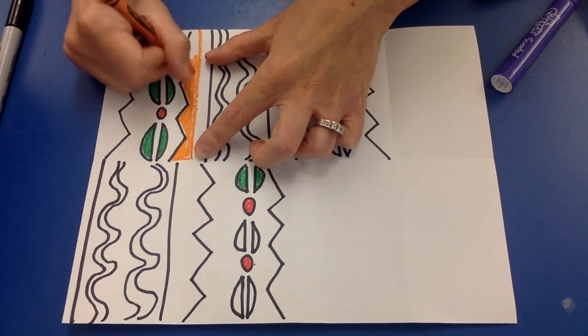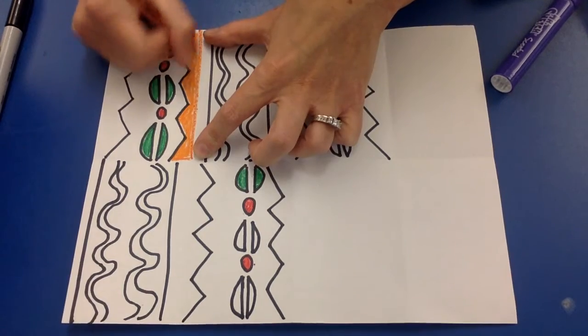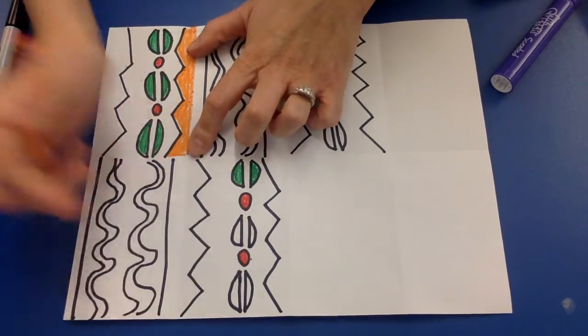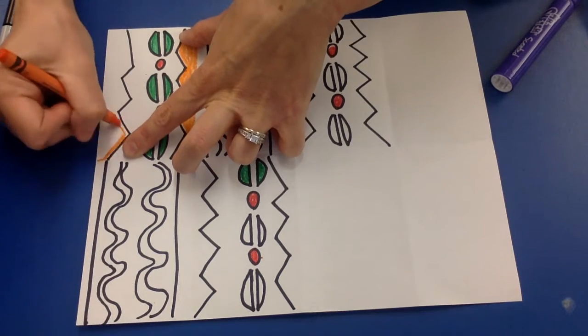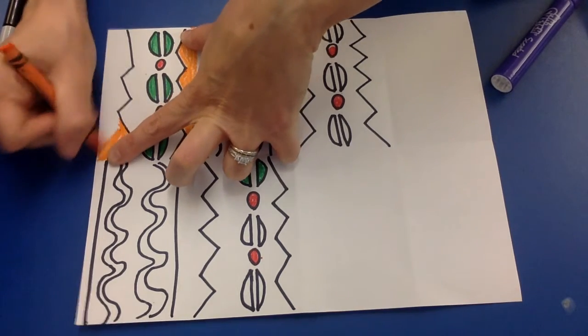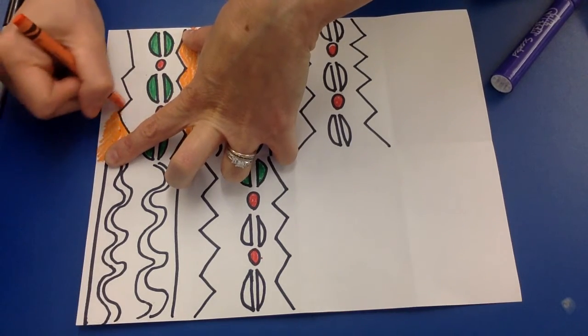If you leave too much white in your artwork, let's say you wanted the dots white, it's just not going to look finished. So color in the majority of your art. If these zigzags are orange, the other zigzags are orange.